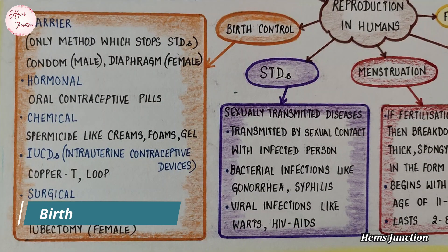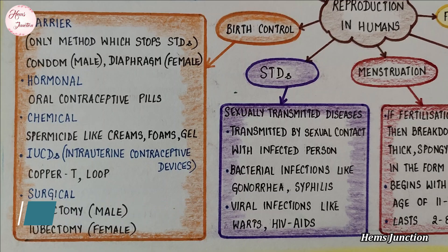Birth control methods: The sexual act always has the potential to result in pregnancy. The prevention of pregnancy is called contraception or birth control. The methods used to prevent the occurrence of pregnancy are called contraceptive methods. These can be barrier, hormonal, chemical, or surgical.